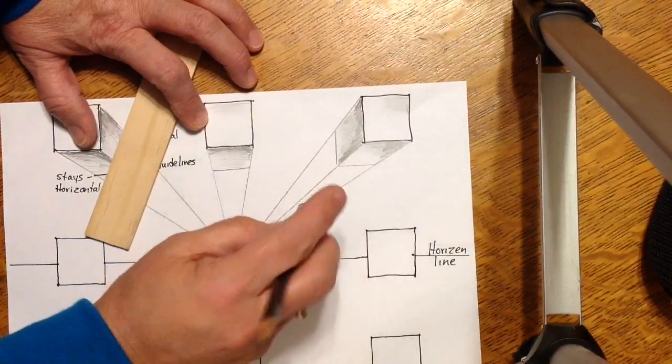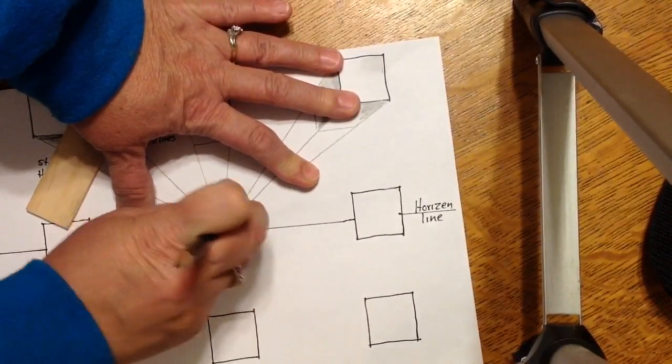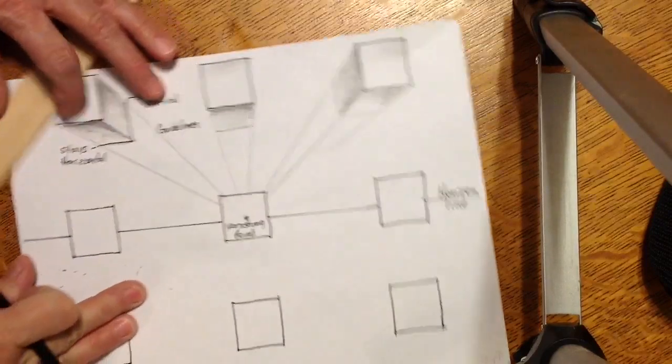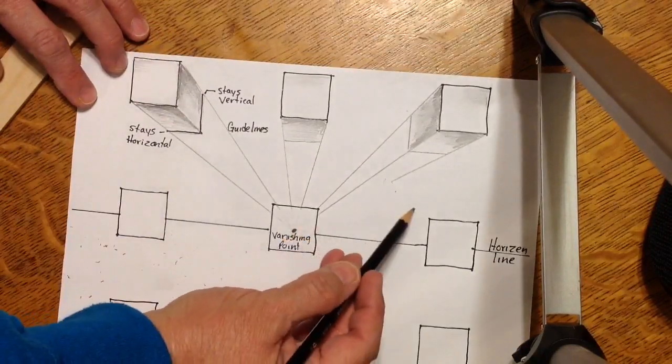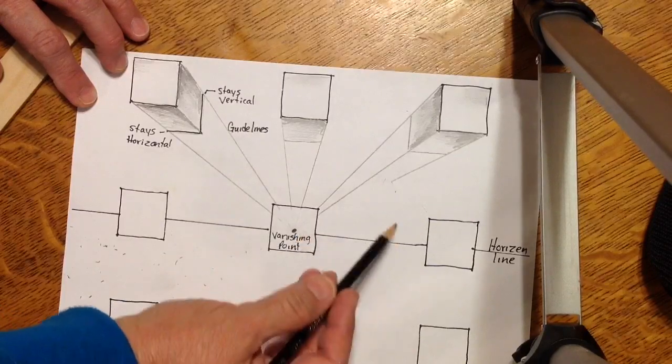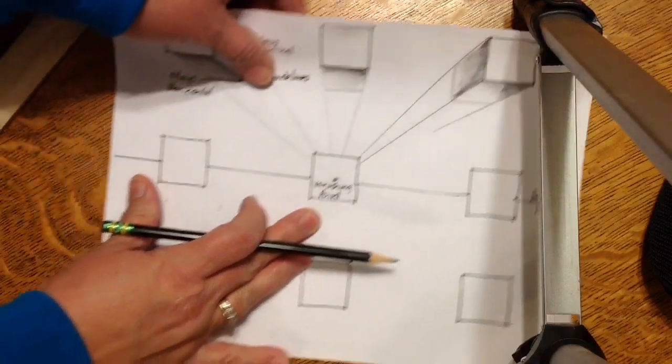And you'll continue doing this to all nine boxes. Then you'll erase your guidelines. The box in the middle won't have any because you're looking at it straight on. But you're going to continue connecting to all the corners that are closest to the vanishing point.